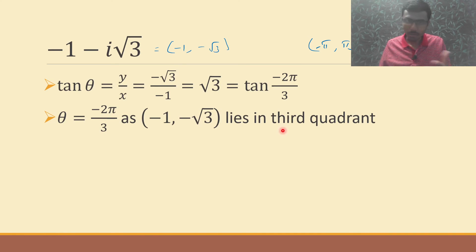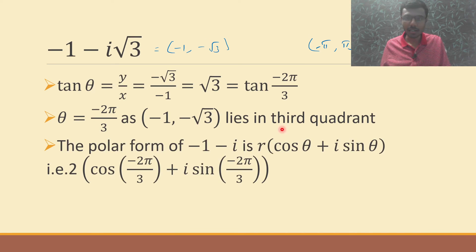So that's it. We got r, we got θ. Just substitute them in our polar form. Our polar form is r(cos θ + i sin θ). Just substitute them, it's done. We are done with the polar form.